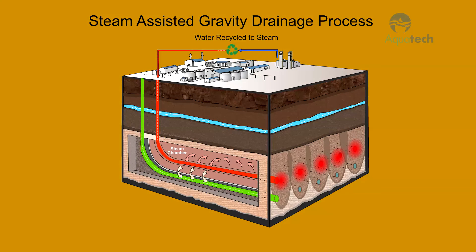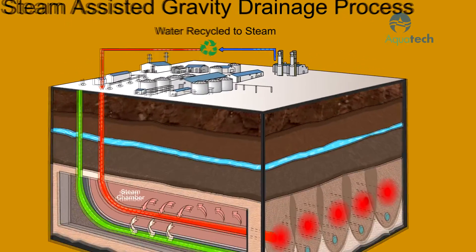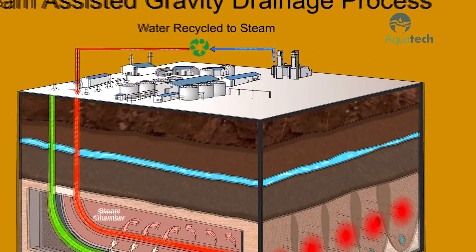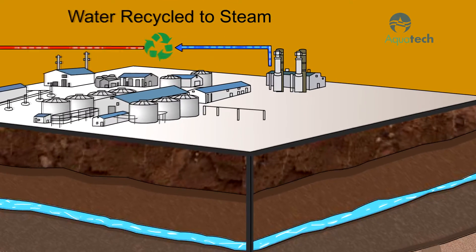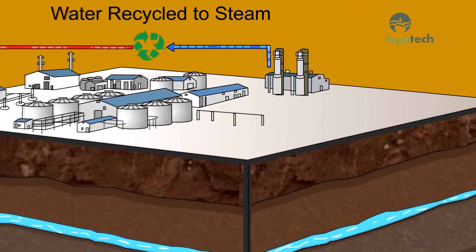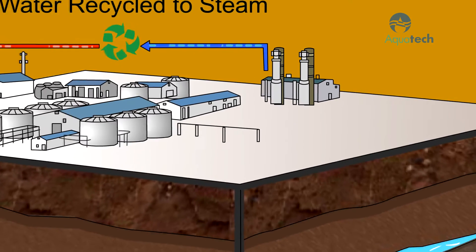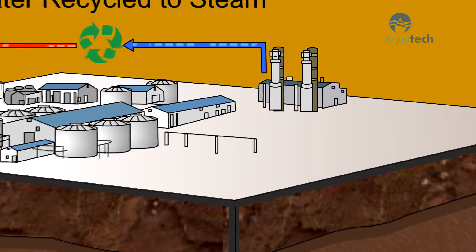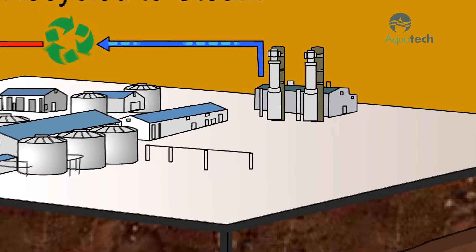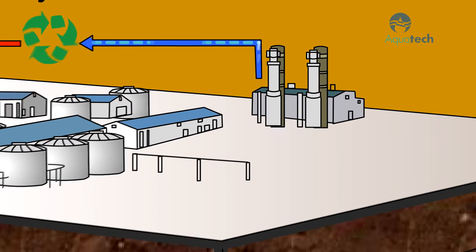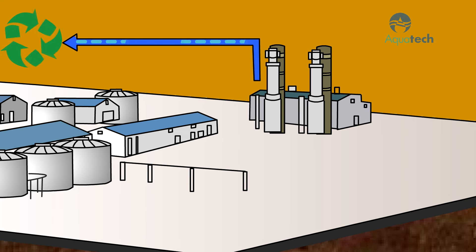Steam Assisted Gravity Drainage, or SAG-D, is an enhanced oil recovery technology for producing heavy crude oil where steam is injected into the ground to improve yields. Large facilities are required to recycle the produced water and create steam for the SAG-D process. Thermal evaporation is one of the most effective technologies for recycling produced water.